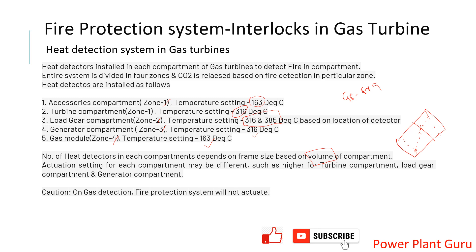An important point to note is that there are also separate gas detection systems, and we should not confuse them with the fire protection system. This is a hazardous gas detection system that may be triggered due to a fuel leak or any hydrocarbon leak. The CO2 suppression system will not actuate based on this hazardous gas detection — it is a separate system.